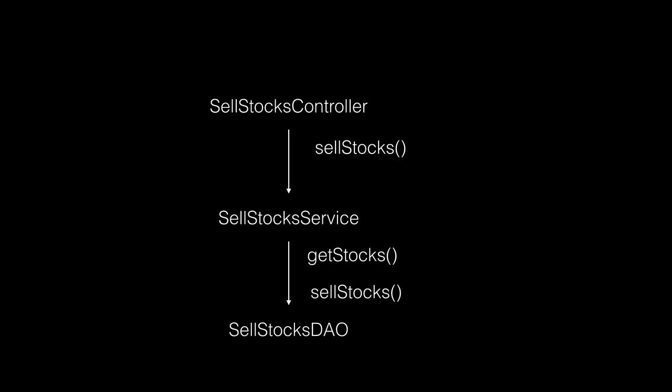In this lecture we will learn about the various transaction attributes that are available in the Java EE standard. Let's consider an example of a stock selling application wherein typically any J2EE application is divided into layers, and we put our code across layers.